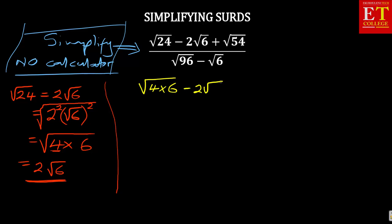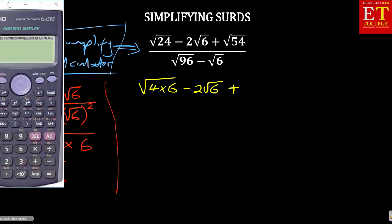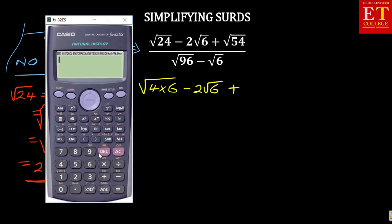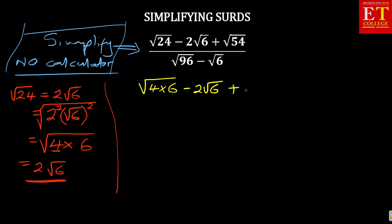Minus 2 root 6 plus... Now, what about 54? You take your calculator again and ask yourself, what is the square root of 54? So you punch square root of 54, it says 3 root 6, so 3 squared is 9. So 54 is same as square root of 9 times 6. So you see, you are using a calculator, but there is no proof that you are using a calculator.